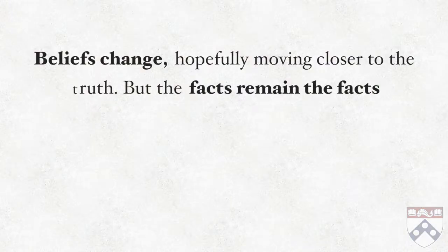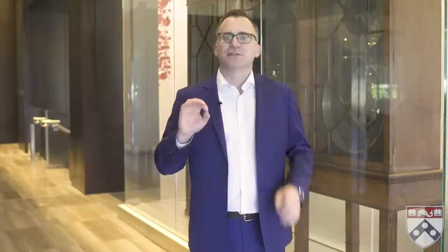But remember, we can also have mistaken or false beliefs. Sadly, all of us hold on to many false beliefs. And more importantly for this class, scientists can also have false beliefs — they can be wrong about the facts. This points to an absolutely essential and foundational principle of science: there can be a difference between what scientists believe to be true and what is actually true. Beliefs change, hopefully moving closer to the truth, but the facts remain the facts. We use scientific methods to grasp the facts, but we can be mistaken.